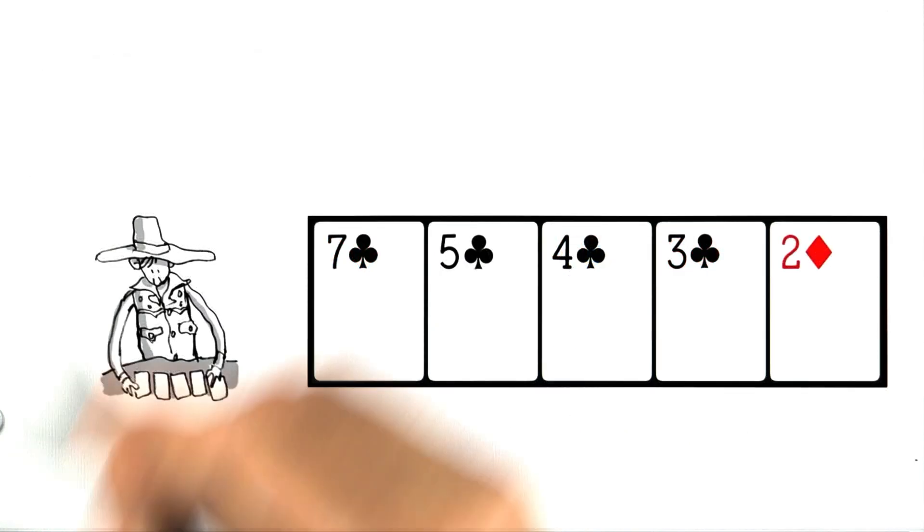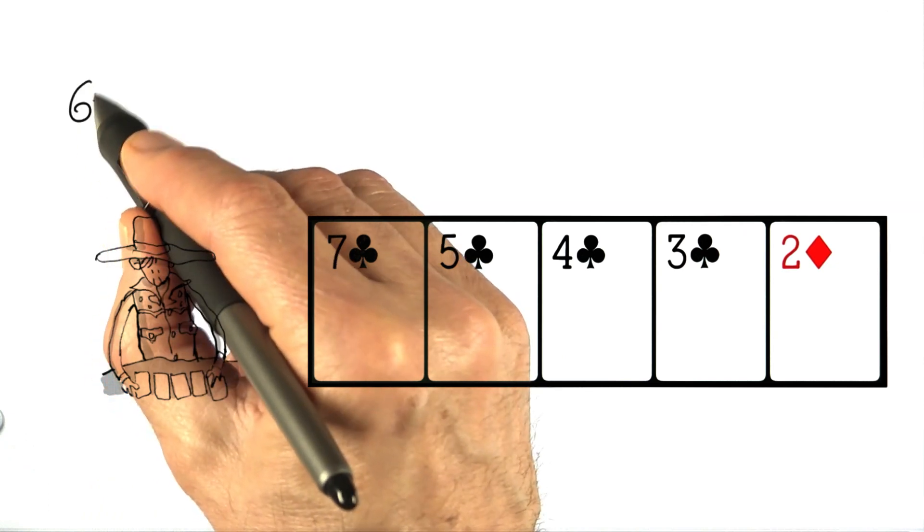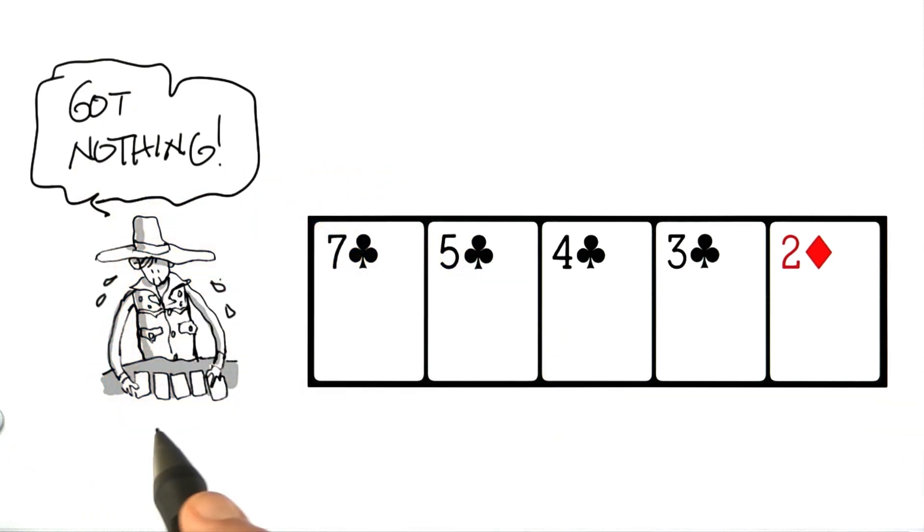Our final hand, and our poor player declares, I got nothing. Now he's really crying, but sometimes nobody else has anything either, and then we still have to decide, among the players who have nothing, who wins, and we just go in order of the ranks of the cards. So nothing is 0, and then the ranks of the cards from highest to lowest.